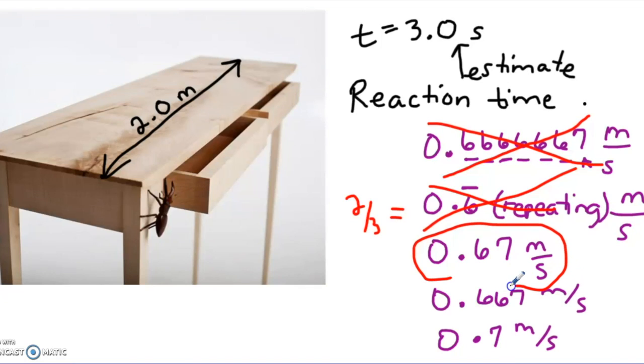And the reason is because if you look up here, you knew for certain that the table was 2 meters and you know for certain the time is 3. And so you can be certain of this 0.6. What you're uncertain of was you only had one uncertain digit.